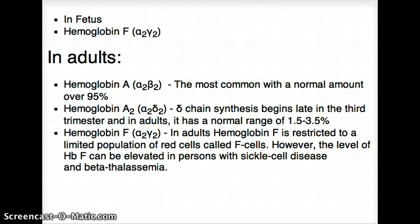From about the third trimester, a fetus is going to start making hemoglobin A2, which is not alpha 2 and beta 2 — it's alpha 2 and delta 2. That consists of a small range of hemoglobin in an adult. So if you ever see that hemoglobin A2 is significantly higher than it should be, you know there is a pathology associated with the structure of hemoglobin.